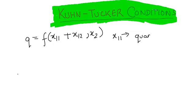First we assume an input option. An entrepreneur has the following two input production function: q equals f(x11 plus x12, x2). Here x11 represents quantity of x1 the entrepreneur produces, and x12 is the quantity that she purchases in the market at a constant price of r1 dollars.